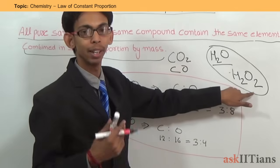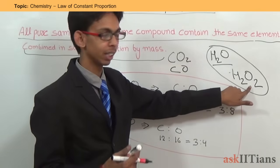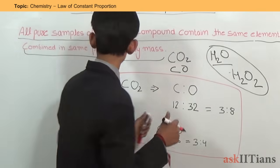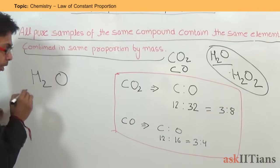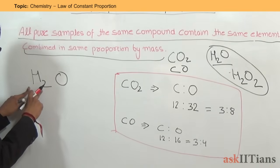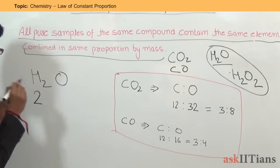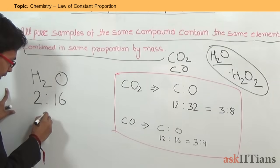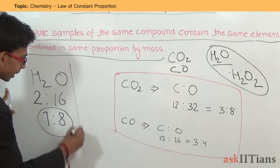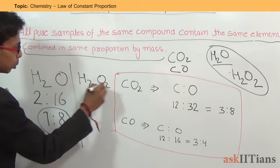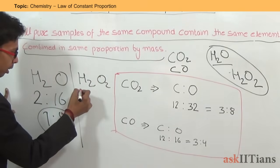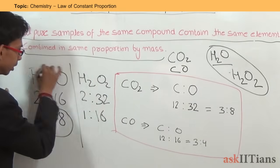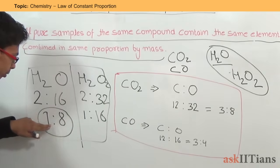We can say the difference is in the ratio of number of atoms, or in terms of mass, in the ratio of mass of the atoms. For the water molecule, there are two atoms of hydrogen — mass of 2 grams — and one atom of oxygen of 16 grams. So the ratio is 1 to 8. In the case of hydrogen peroxide, there are two atoms of hydrogen and two atoms of oxygen, so the ratio of masses is 2 to 32, that is 1 to 16. So the difference is in the ratio of masses.